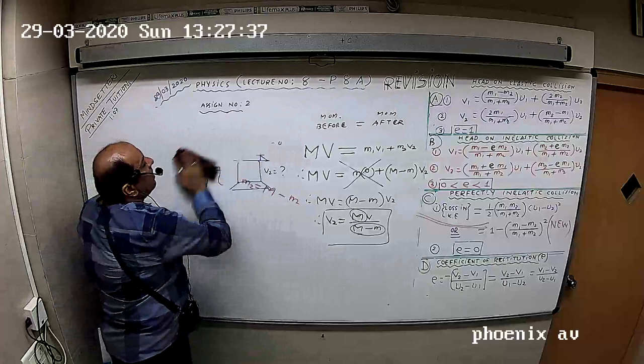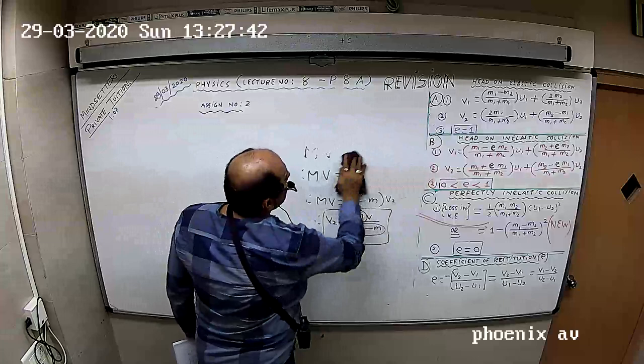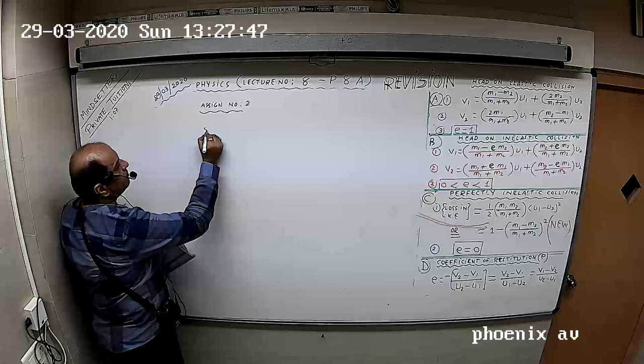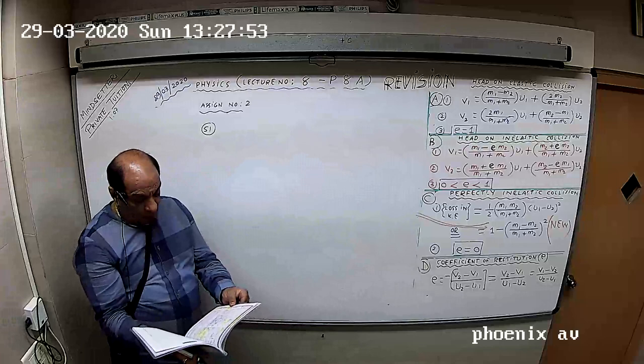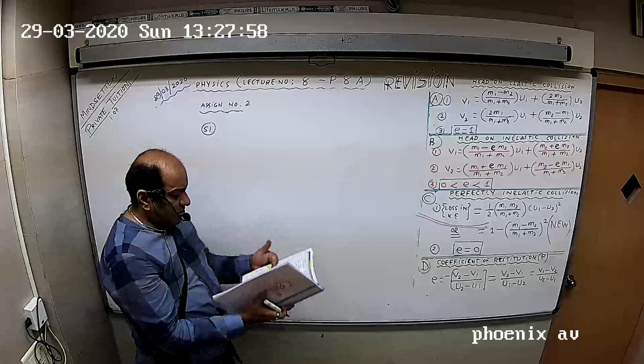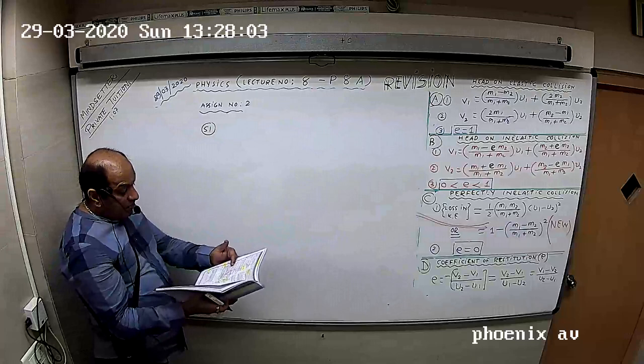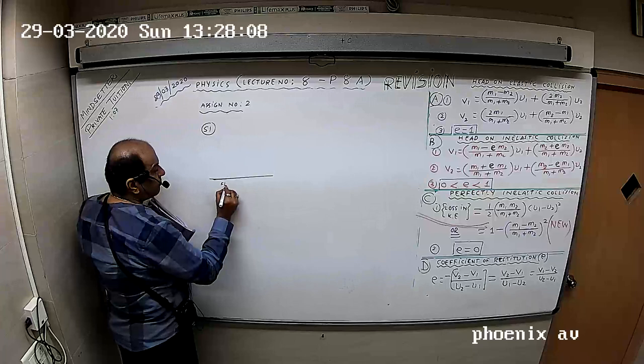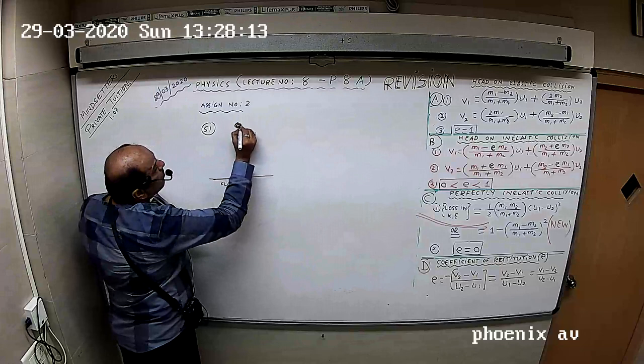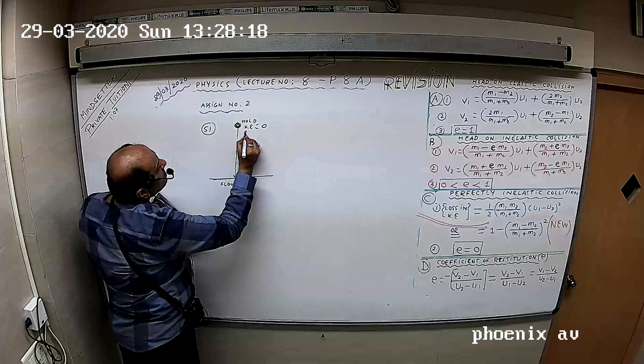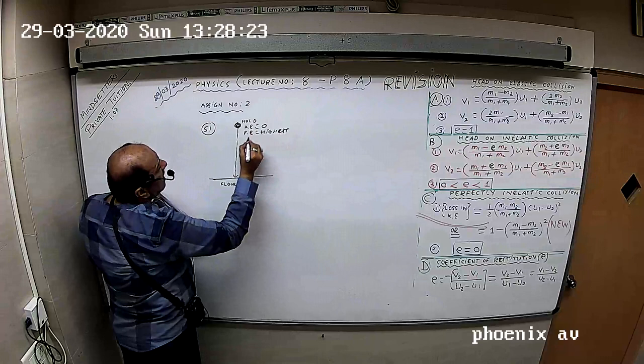Question number 51. This is something similar which we have done so many times. A ball is projected vertically downward with initial velocity from a height of 20 meters onto the floor. This ball, this is the floor, the ball is here.